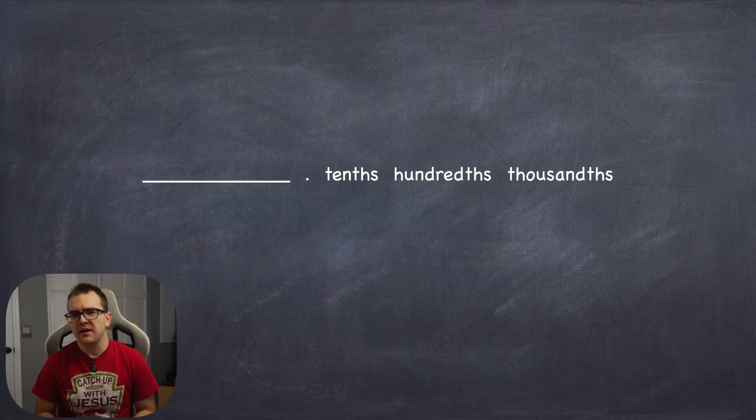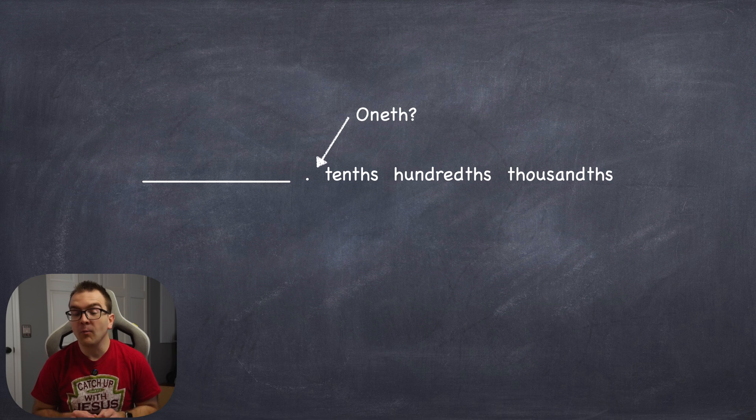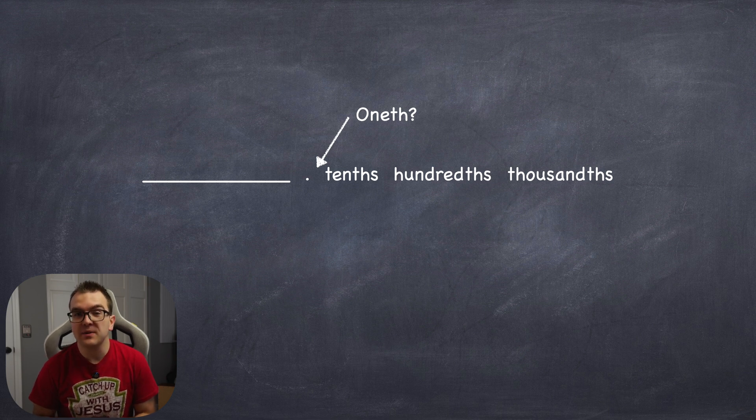So here's a great question that was submitted to me recently. When working with decimal place value, why isn't there a one-th instead of a tenth to start with? Great question. That's because place value in decimals is based on fractions of 10. So what does that mean?